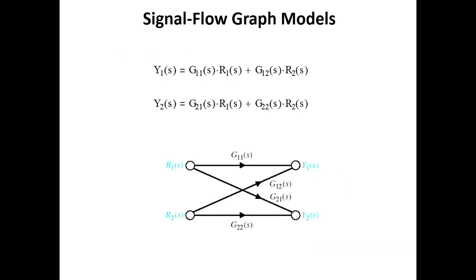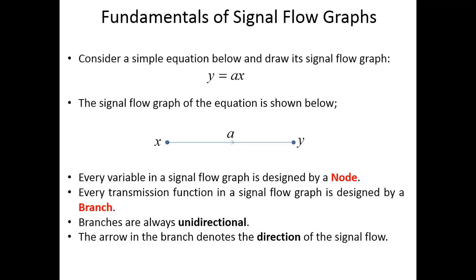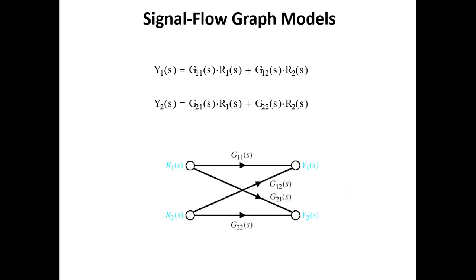In the signal flow graph model: y1(s) = g11(s)·r1(s) + g12(s)·r2(s), which follows the same form as y = ax. Here y1 and y2 are your outputs, and g11 and g12 are the branch transmission functions of the signal system.